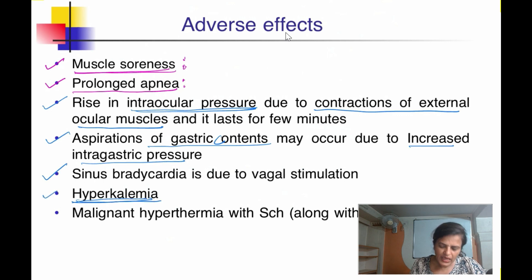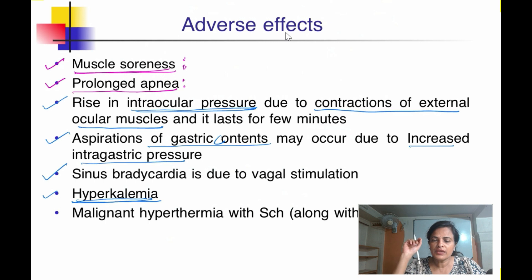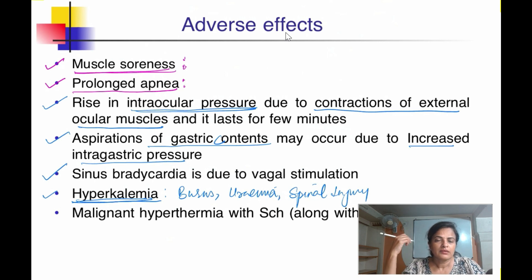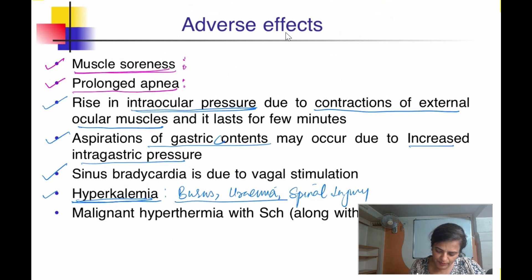Another very important adverse effect is hyperkalemia, caused by efflux of potassium from the intracellular compartment. In a normal individual this doesn't have much clinical relevance. However, in patients with burns, uremia, or spinal injury, you should use another drug instead of succinylcholine — you can go for rocuronium. Hyperkalemia is a most important side effect of succinylcholine that you must not forget.